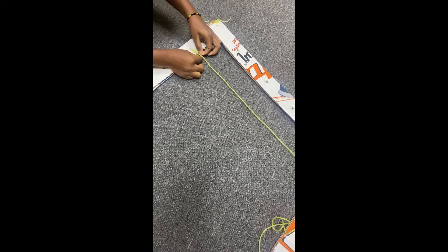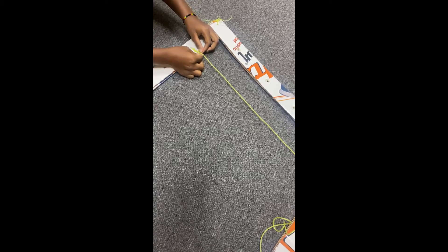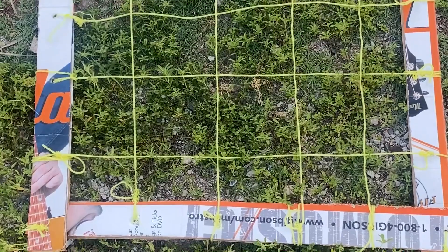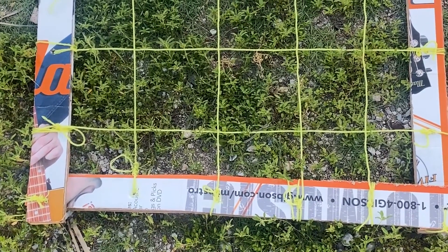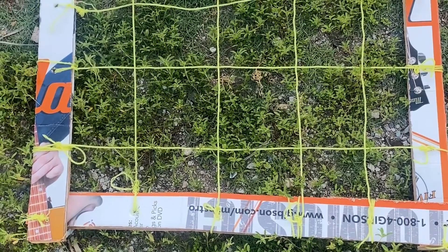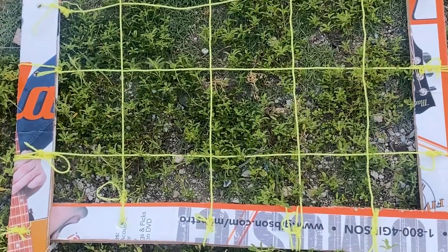Now let's see how you can use the quadrat. You can go anywhere in your yard and randomly throw the quadrat on the ground, then count the amount of organisms in each small square on the quadrat.